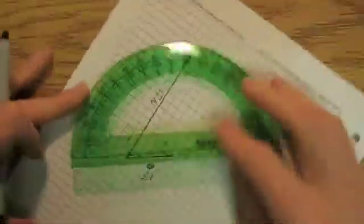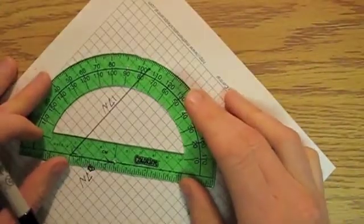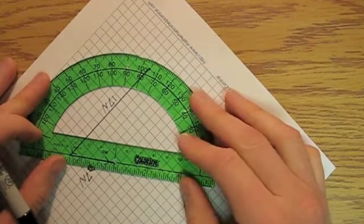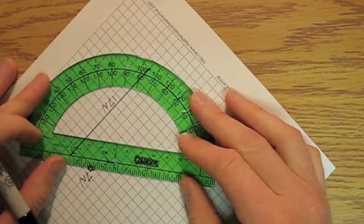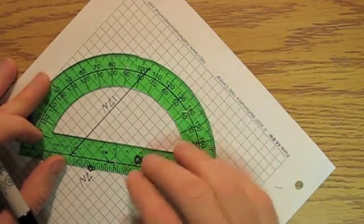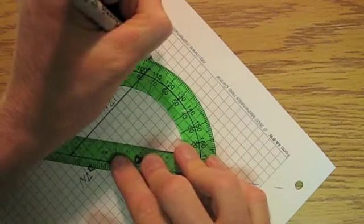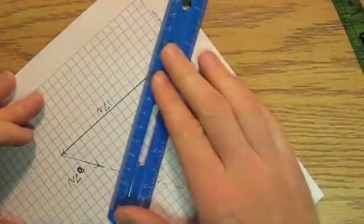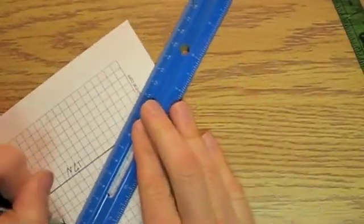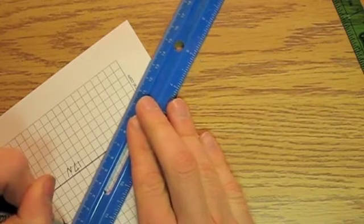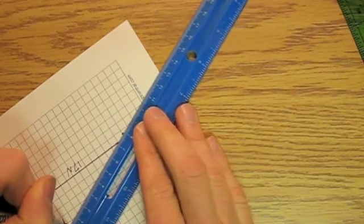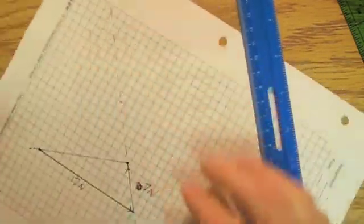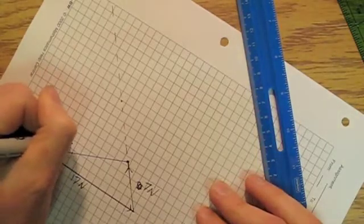And so I'm going to go from the very, very tip of the 7 newton vector. And I line it up with my helper line. And I'm going to go 76 degrees off of that line, which is going to be right here. And I'm going to go 7.5 centimeters in that direction. And so that is 15 newtons.